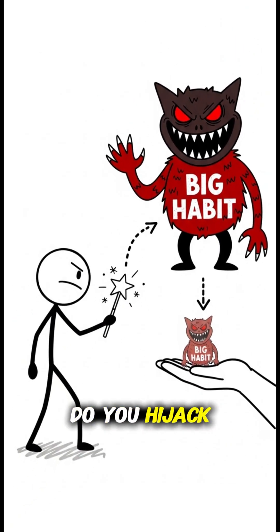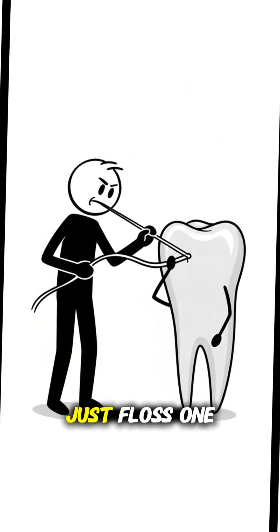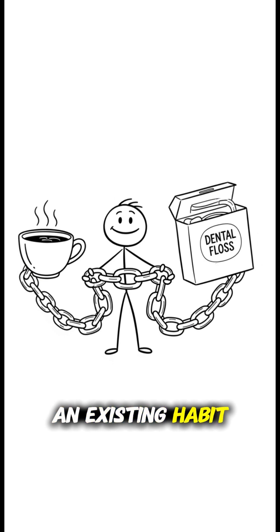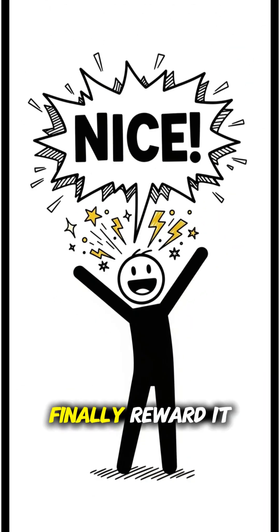So how do you hijack it? First, shrink the habit. Instead of flossing all your teeth, just floss one. Next, chain it to an existing habit, like flossing right after your morning coffee. Finally, reward it with a tiny dopamine hit. Just say nice out loud.